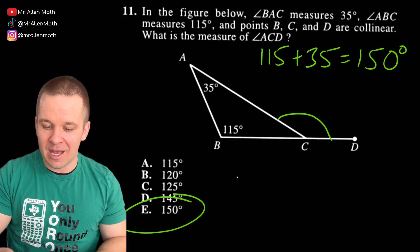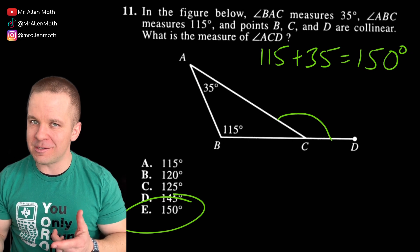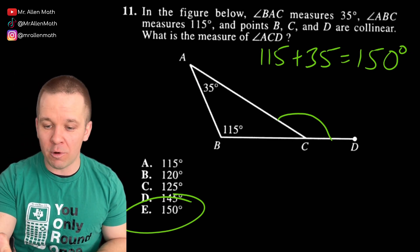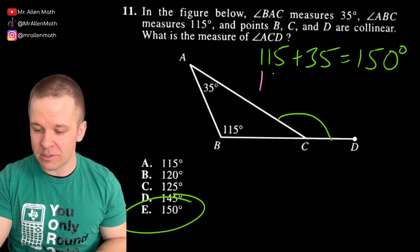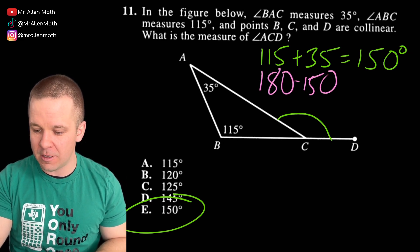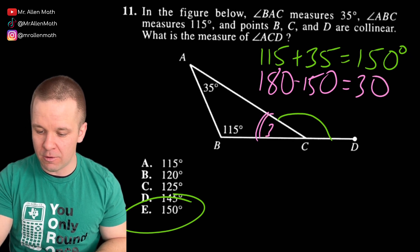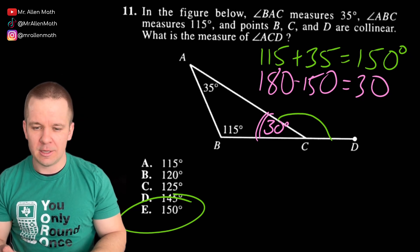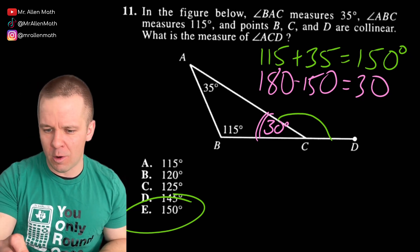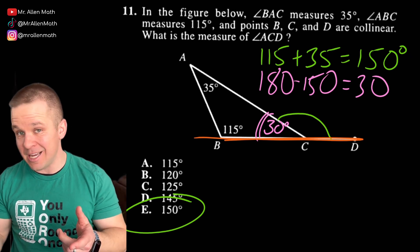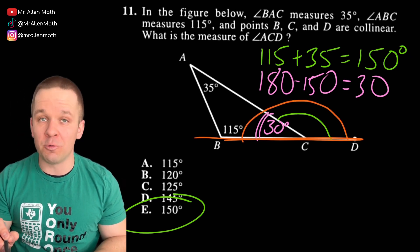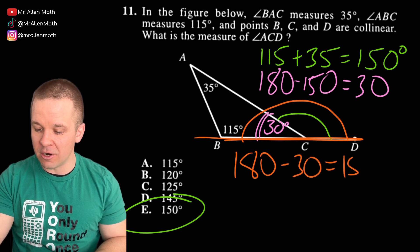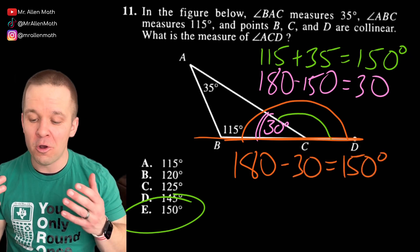But not everybody is going to remember that specific property there. So there is another way to work through that. I know there's 180 degrees in a triangle. So if I add those two up, which we've already done, there's 150 degrees. And if I take 150 and I subtract it from 180, so 180 minus 150, I end up with 30 degrees, which is this angle right here.